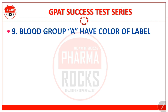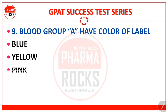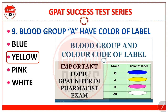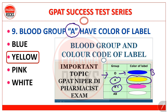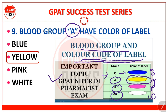Question number 9: blood group A has a color code of label — blue, yellow, pink, or white? The correct answer is option B: yellow. Blood group A → yellow color label. Blood group O → blue color. Blood group B → pink color. Blood group AB → white color. Remember all four colors for the different blood groups. A video lecture on this important topic — 'Blood Group and Color Code of Label' by PharmaRocks — is also available on the channel.